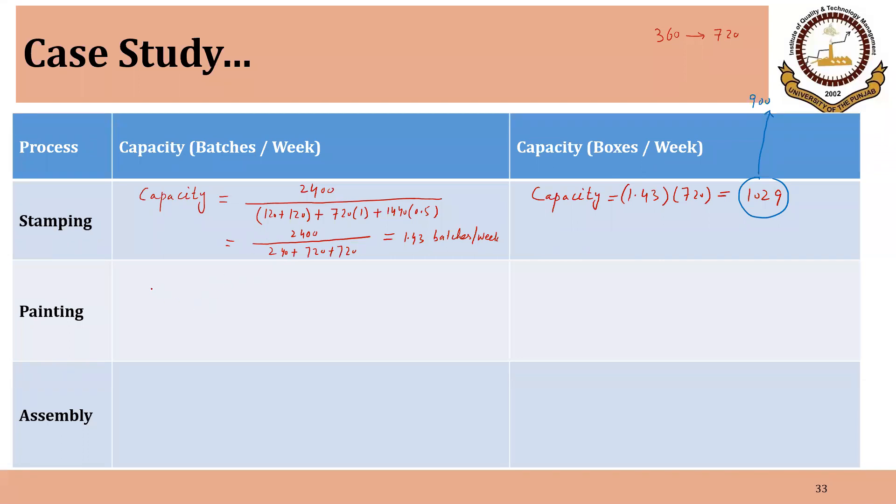And similarly for the painting, the available time is the same, 2400 minutes per week. So changeover time was 20 and we are having 720 part A and each required half a minute and 1440 part B's and each required one over six minutes or 10 seconds. So that will be equal to 2400 divided by 20 plus 316 plus 240. So that will be equal to 3.87 batches per week.